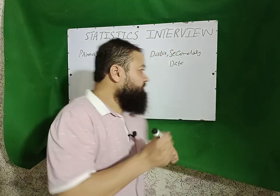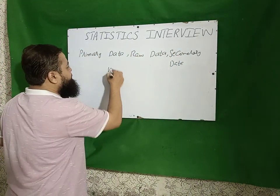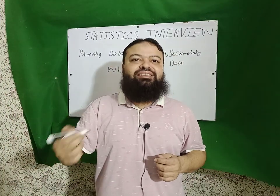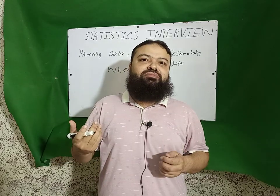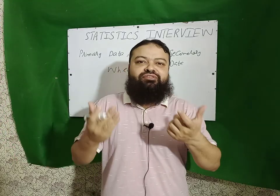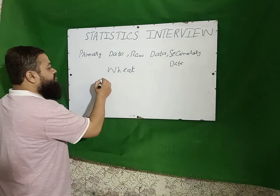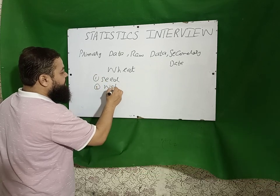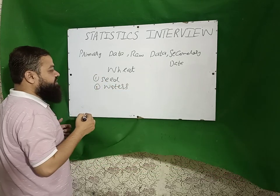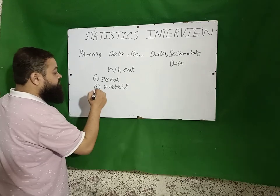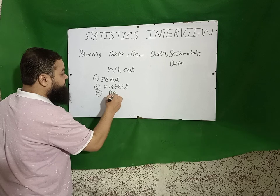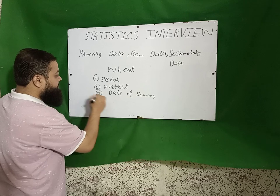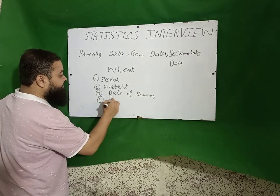For example, you are interested in the production of wheat. You go into the fields and you investigate from the farmers. You meet different farmers and you take information on how much quantity of seed has been used, how many waters have been applied by the canal, when the date of sowing is for that crop, and how much quantity of fertilizer has been used.